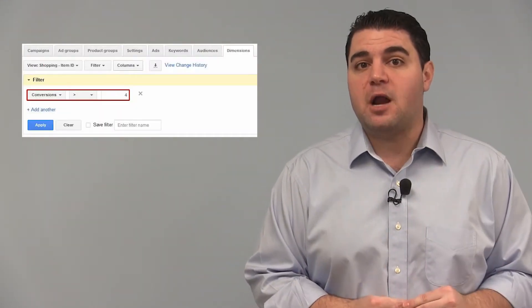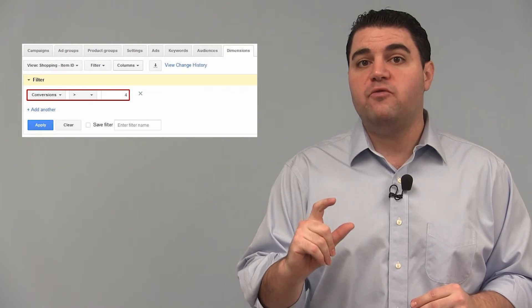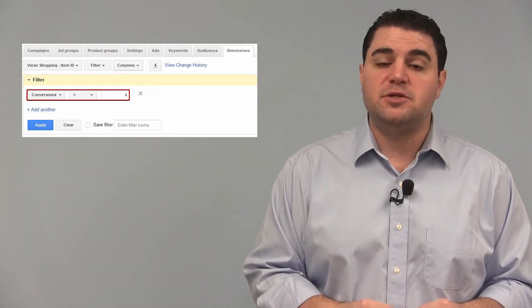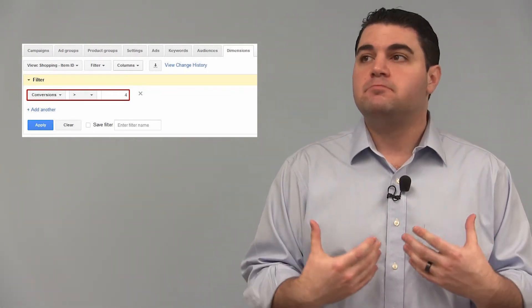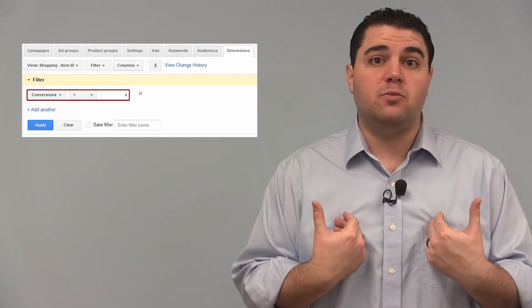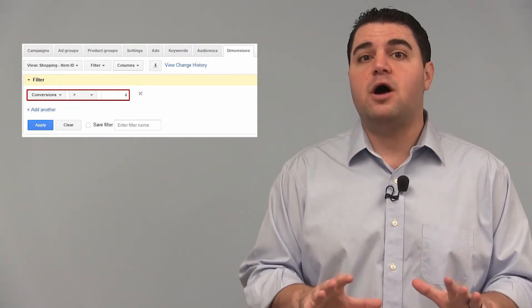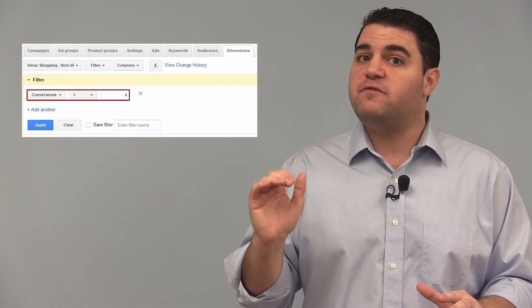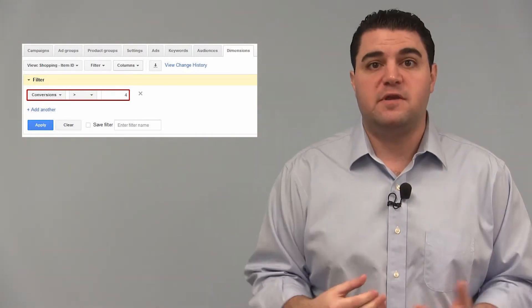So use a filter in AdWords and select conversions over your conversion sweet spot. So this would be conversions greater than let's say four in my example. So my top performers, at least the way the ones I indicate, are any products that have conversions over four and up to the top level of 12 or 15.